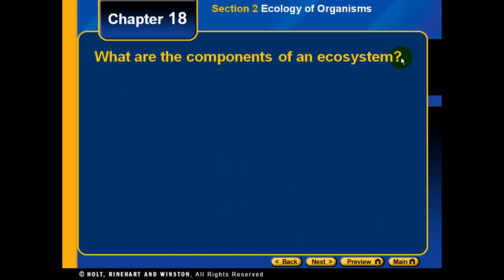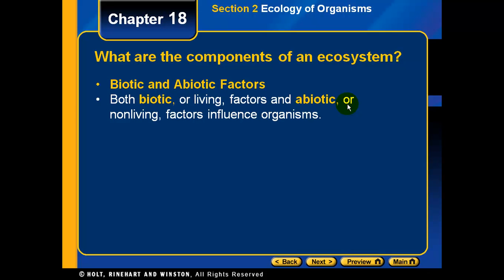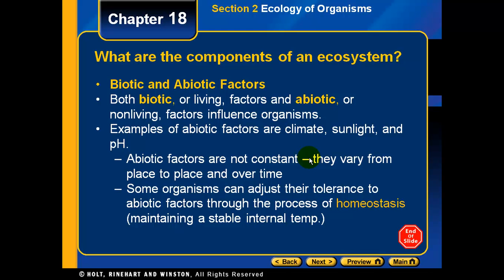What are the components of an ecosystem? From the last section, we learned an ecosystem is composed of the organisms that live there and the non-living components of the ecosystem. We have terms for this — they're called biotic and abiotic factors. Biotic are the living components of the ecosystem. Abiotic are the non-living components or factors that influence organisms in an ecosystem. Examples of abiotic factors are usually weather-related, like climate, sunlight, and pH. Abiotic factors can change — they're not constant. They can change from place to place and over time.